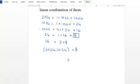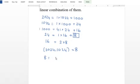Now we will express the GCD as a linear combination. We do the backtrace. Starting from the step: 8 equals 24 minus 1 times 16.